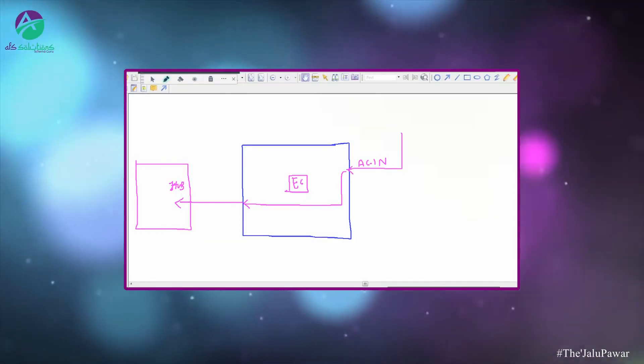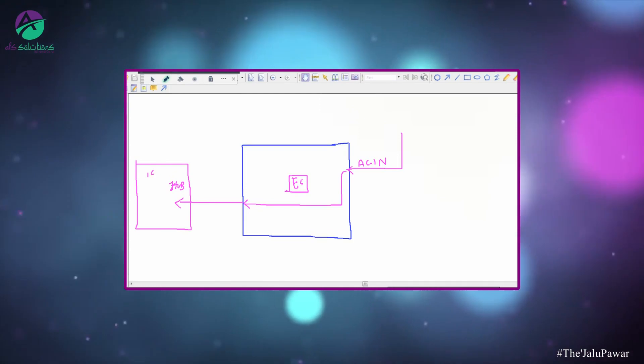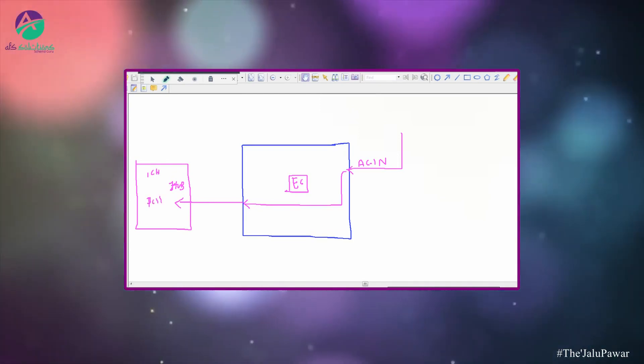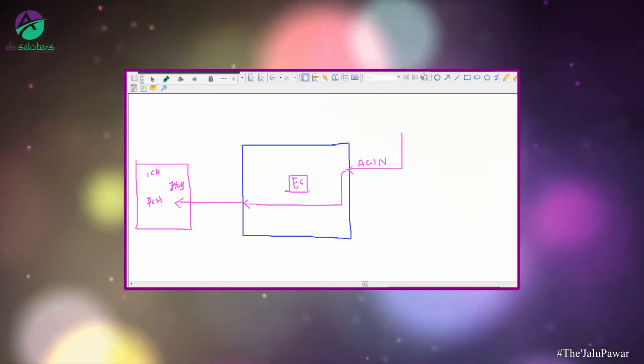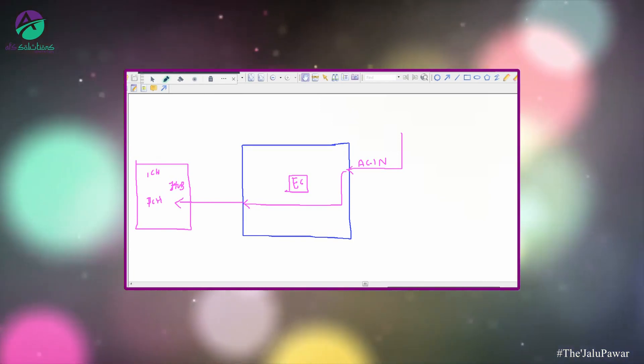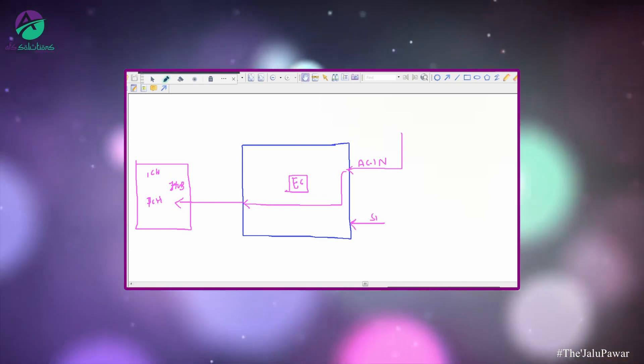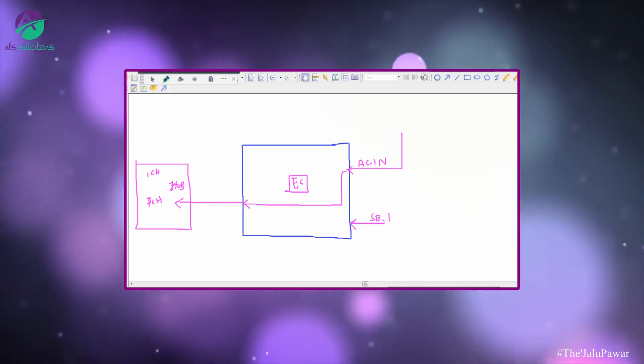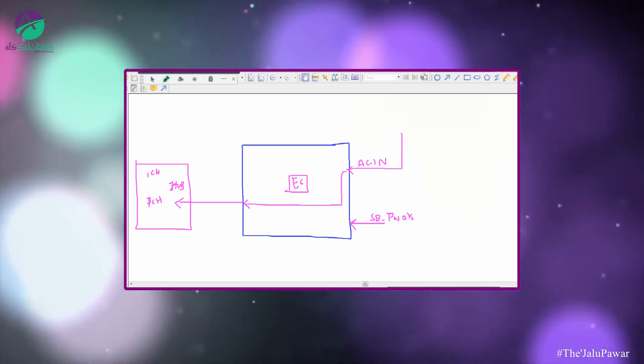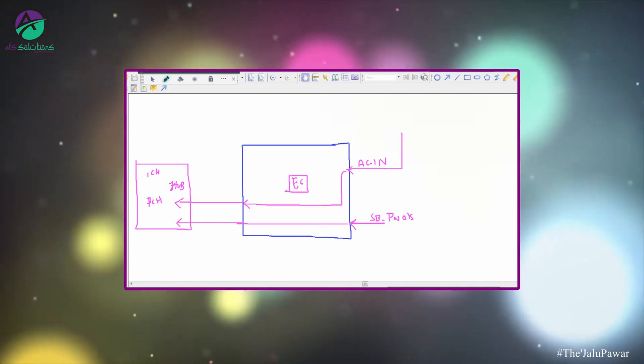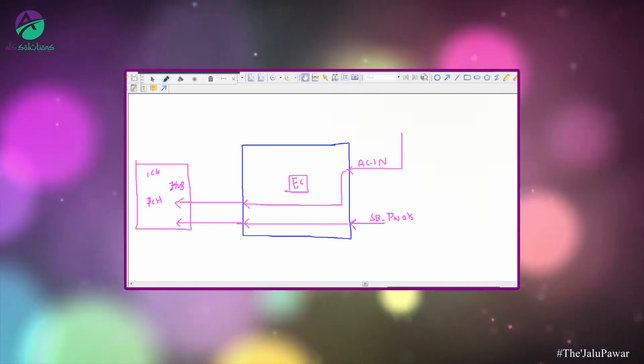Up will be my ICH or PCH. Second confirmation will be SB power OK. So, this information also will go to the ICH. Okay.